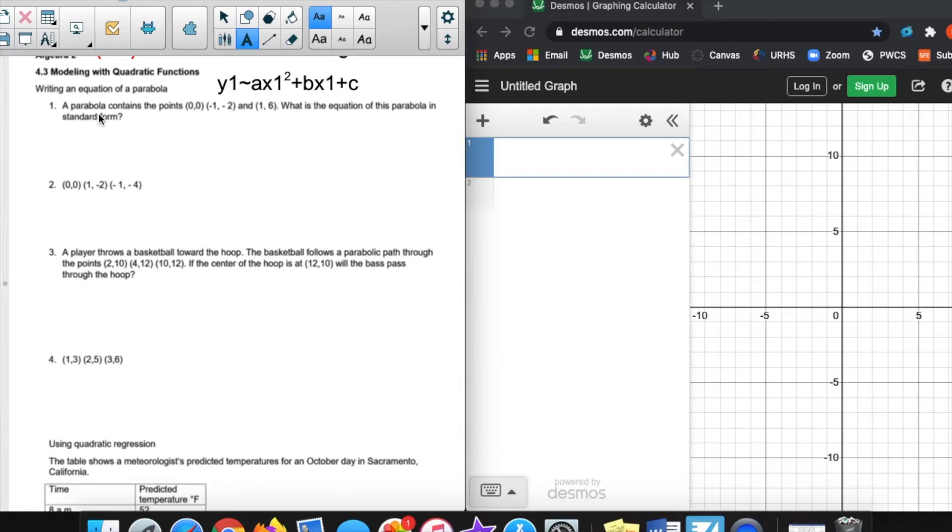This first one says a parabola contains the points (0,0), (-1,-2), and (1,6). What is the equation of this parabola in standard form? We're given a situation where we have these three points, and we're told that this parabola passes through those three points. We're asked to find the equation. The easiest thing that we can do is put those points into Desmos. We're going to put it into a table. So that first point, x value 0, y value 0. That's my first point, and you see the purple point shows up right there.